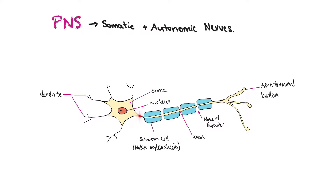The little gaps in the myelin sheath are known as nodes of Ranvier, and they help speed up transmission as well. Instead of having to travel slowly along the entire neuron, nerve impulses can jump from node to node in a process known as saltatory conduction, which greatly speeds up nerve transmission. If an axon doesn't have a myelin sheath, it cannot send signals as efficiently, or at all.